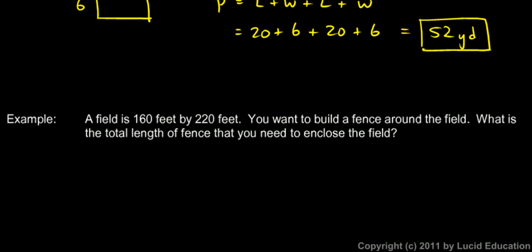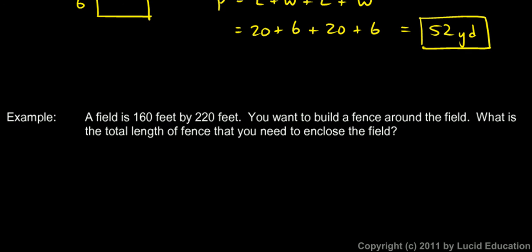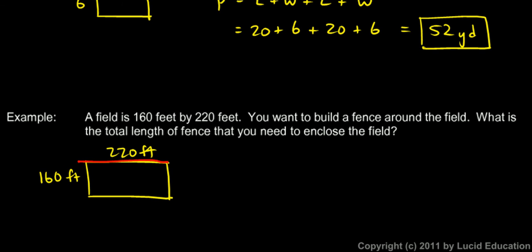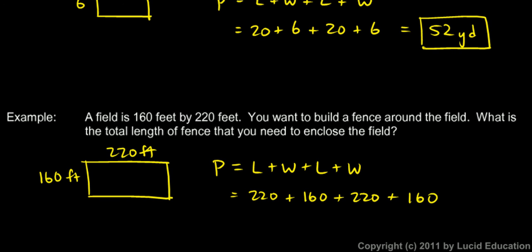In this next example, a field is 160 feet by 220 feet. You want to build a fence around the field. What is the total length of fence needed to enclose the field? If the field has a width of 160 feet and a length of 220 feet, the length of fence needed is just the perimeter of the field. It's going to be length plus width plus length plus width: 220 plus 160 plus 220 plus 160. Those are all in feet. When you add those up, you get 760 feet.